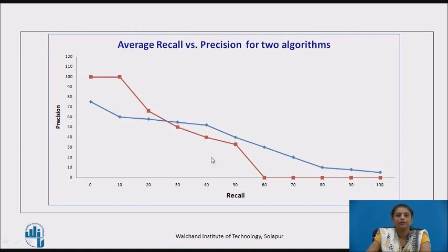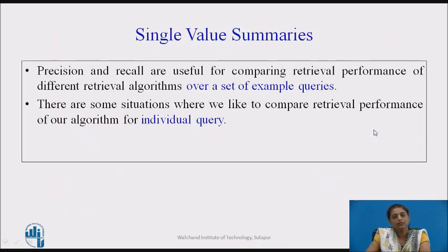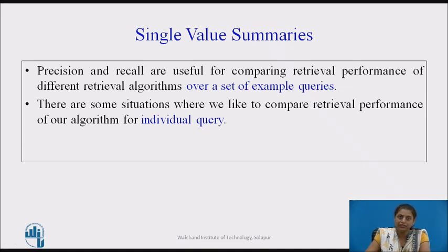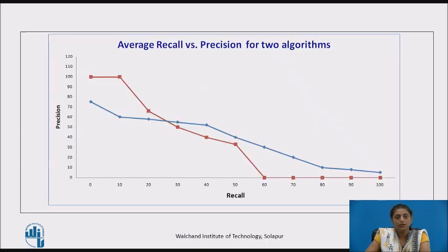Now consider an example with two algorithms and their average recall versus precision graph. One algorithm performs better at lower recall levels whereas the other performs better at higher recall levels. We can use this precision versus recall graph for comparing retrieval performance over a set of queries. In the previous lecture we saw that the algorithm runs for n queries, we find the average, and then plot the graph.